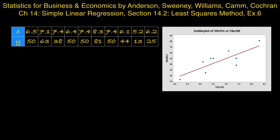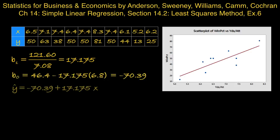Develop the estimated regression equation that can be used to predict the percentage of games won given the average number of passing yards per attempt. First, we'll calculate b₁, which comes to 17.175, and next b₀, which comes to -70.39. We can put those two numbers into the estimated regression equation: ŷ = -70.39 + 17.175x.